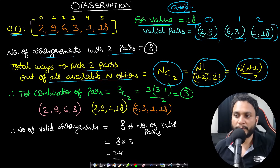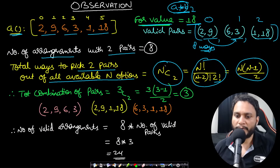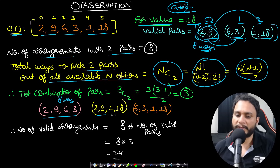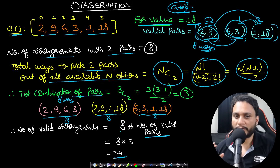Once you pick two pairs, for any valid combination — like 2, 9, 6, 3 — there will be 8 ways to form the valid tuple. So combining pair index 0 and 1 gives 8 ways; combining 2,9 with 1,18 gives another 8 ways; and combining 6,3 with 1,18 gives another 8 ways. The total number of valid tuples is the number of pair combinations multiplied by 8 valid arrangements per combination. So it will be 8 × 3 = 24. But how do we track the number of valid pairs? We need to track the frequency of each product.